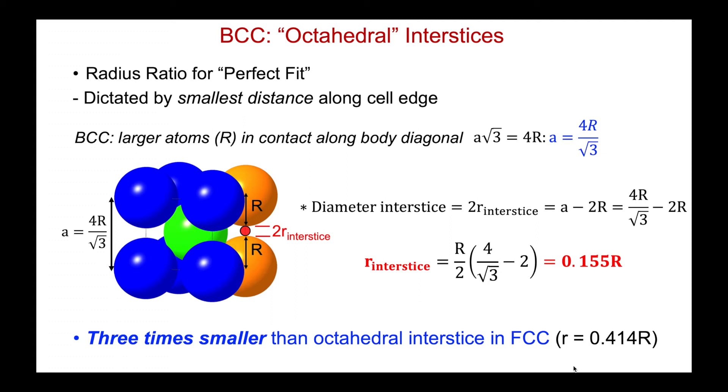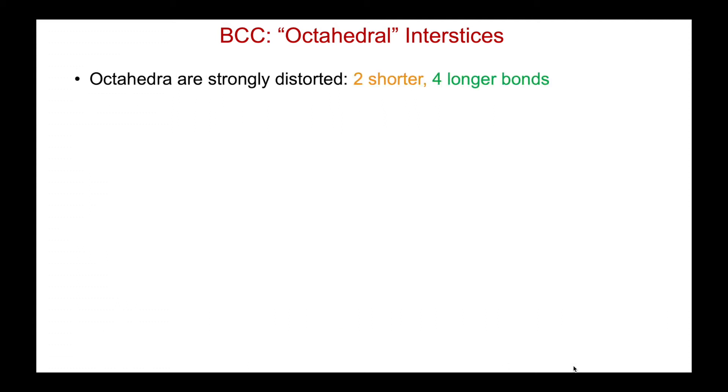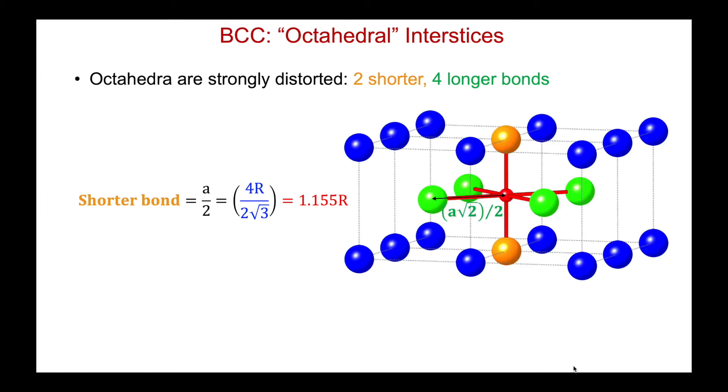We can also quantify the lengths of the longer bonds in this six-fold coordination, this distorted octahedron. As we saw previously, we have two shorter, four longer bonds. For the shorter bond, that's equal to 1.155 R. Well, from simple geometry again, now we'll focus on the longer distance from the interstice to the green atoms, which lie at the body centers of our unit cells, we'll find that the longer bond is equal to 1.632 R. So there's a significant difference between the length of the two of them.